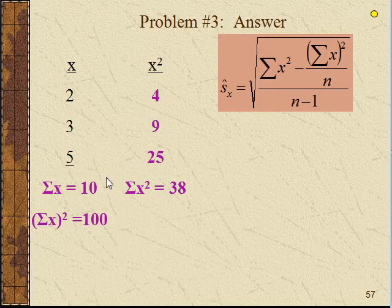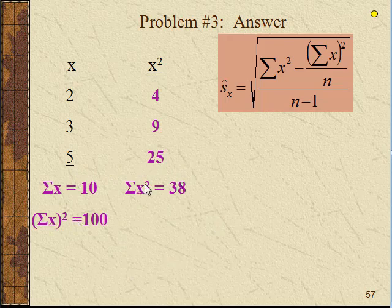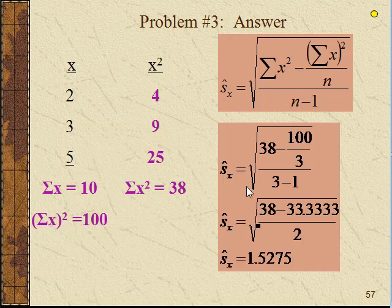Alright, let's see how you did. You should have gotten these values for x and x squared, and when you plug in, you should get these values here. Again, we're taking that 100 divided by 3, plugging that in there, and then from there you should be able to finish it in one fell swoop on your calculator.